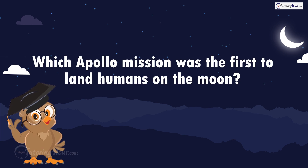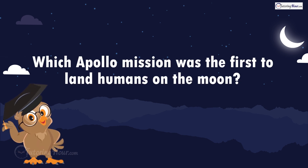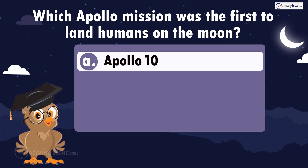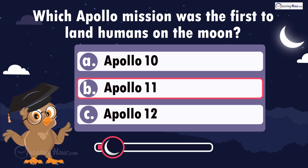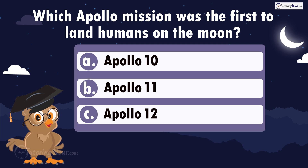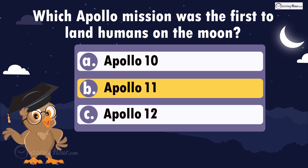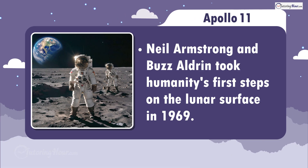Which Apollo mission was the first to land humans on the moon? Is it A, Apollo 10; B, Apollo 11; or C, Apollo 12? The right answer is Apollo 11. Neil Armstrong and Buzz Aldrin took humanity's first steps on the lunar surface in 1969.